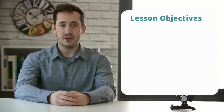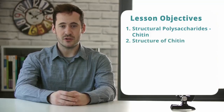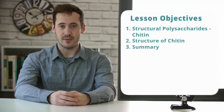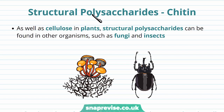Hi guys, in this video we'll look at structural polysaccharides — chitin, the structure of chitin — and then we'll finish with a summary. There are a variety of structural polysaccharides found in life, and one example is known as chitin.